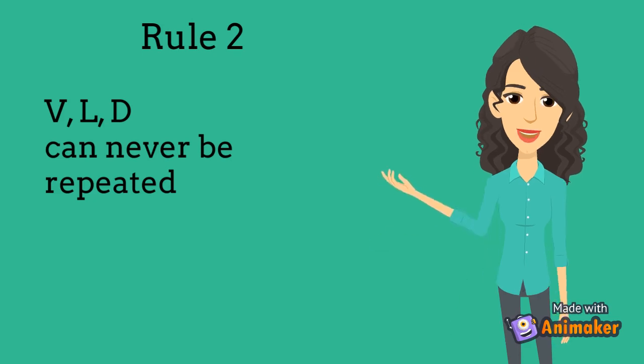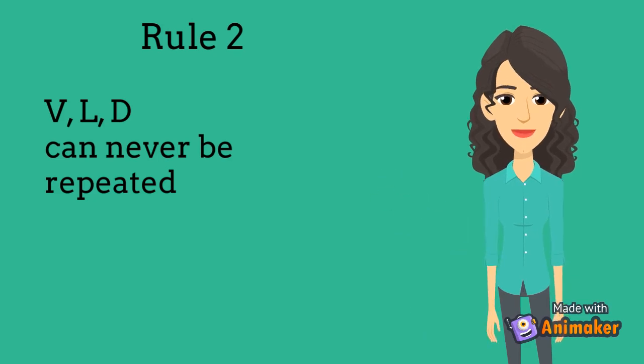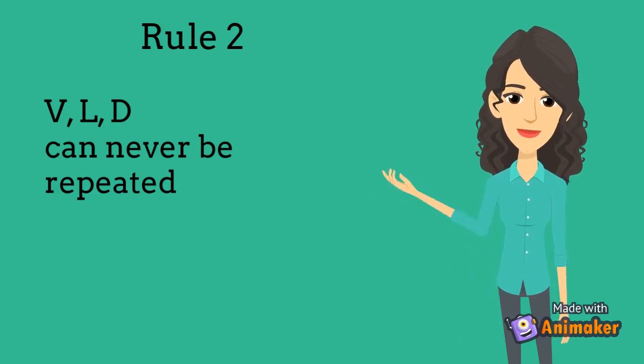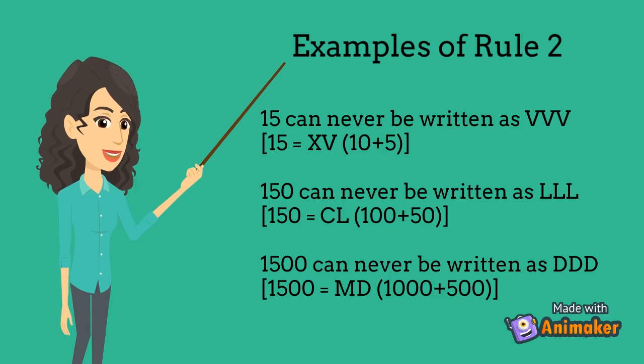Rule 2. V, L, D can never be repeated. Examples for Rule 2: 15 can never be written as VVV. 15 equals XV, which is 10 plus 5.